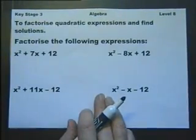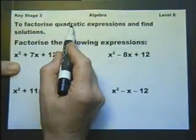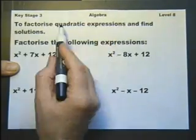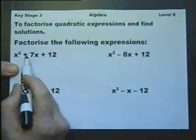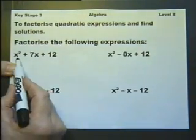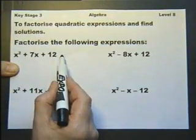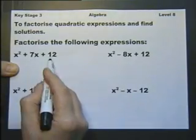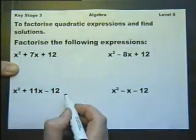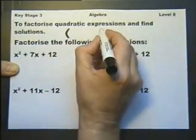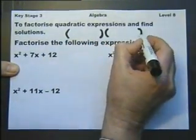We need to be able to factorize quadratic expressions and find solutions. First off, let's factorize these expressions. Expressions don't have equal signs. Equations have equal signs. So these are expressions. In other words, each of these expressions has come from an expansion of two brackets.